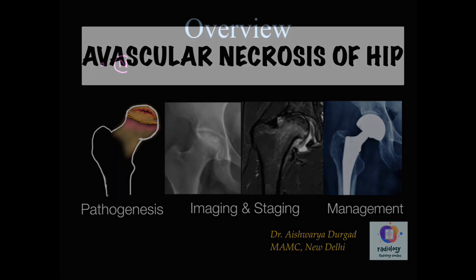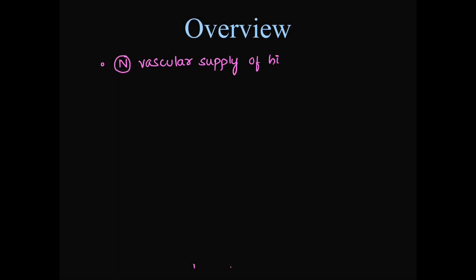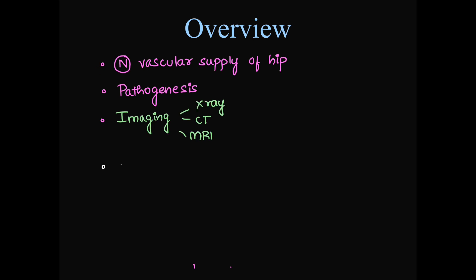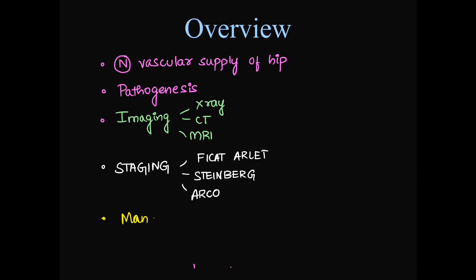Overview of our video: we are going to discuss normal vascular supply of hip, pathogenesis of AVN, imaging involving X-ray, CT, and MRI, staging — all three staging systems — and invasive and non-invasive management of AVN in detail.